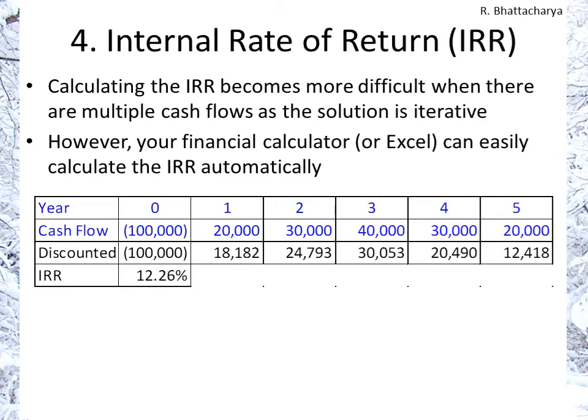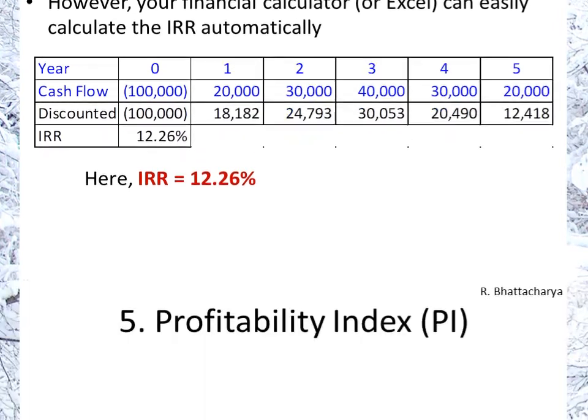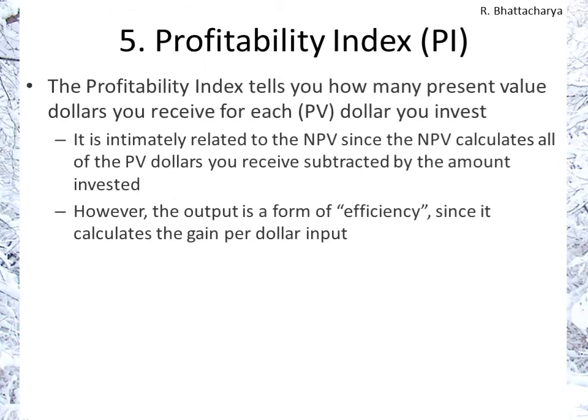Using the numbers we already had, the calculator provides us with an IRR of 12.26%. Given our cost of capital of 10%, we would accept the project.